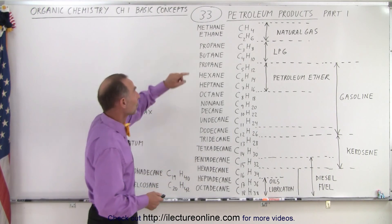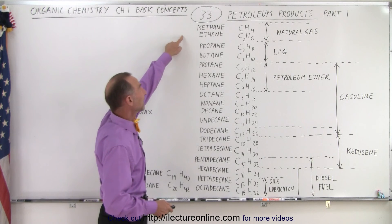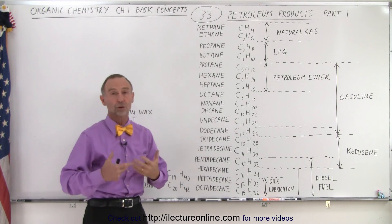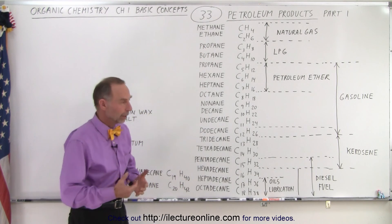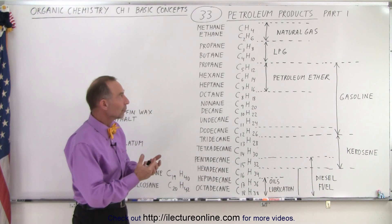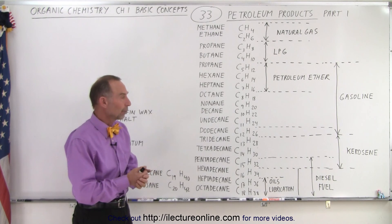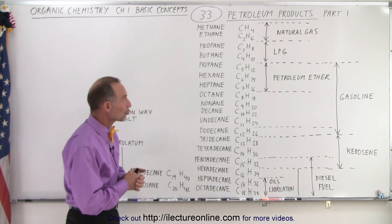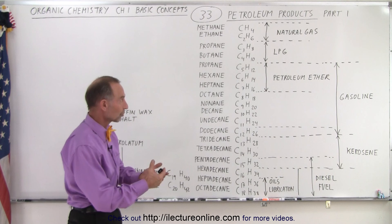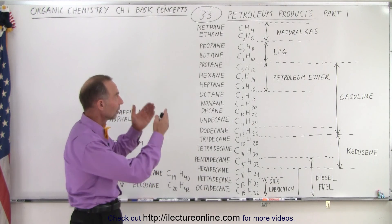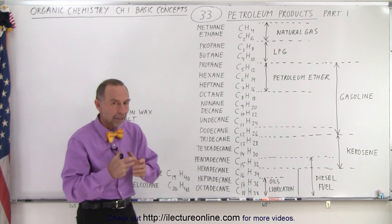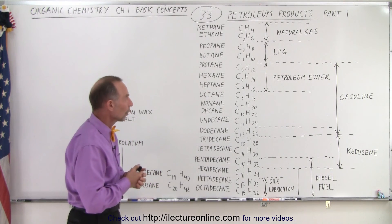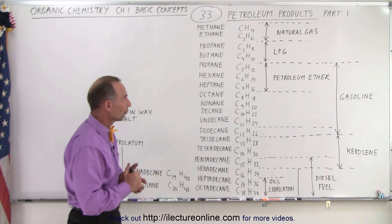Starting with the gas products, methane and ethane is what makes up natural gas. So what you cook with, what you use for heating, and what you use for your dryer — if it works on natural gas, it's usually a methane and ethane combination that you use for cooking and so forth.